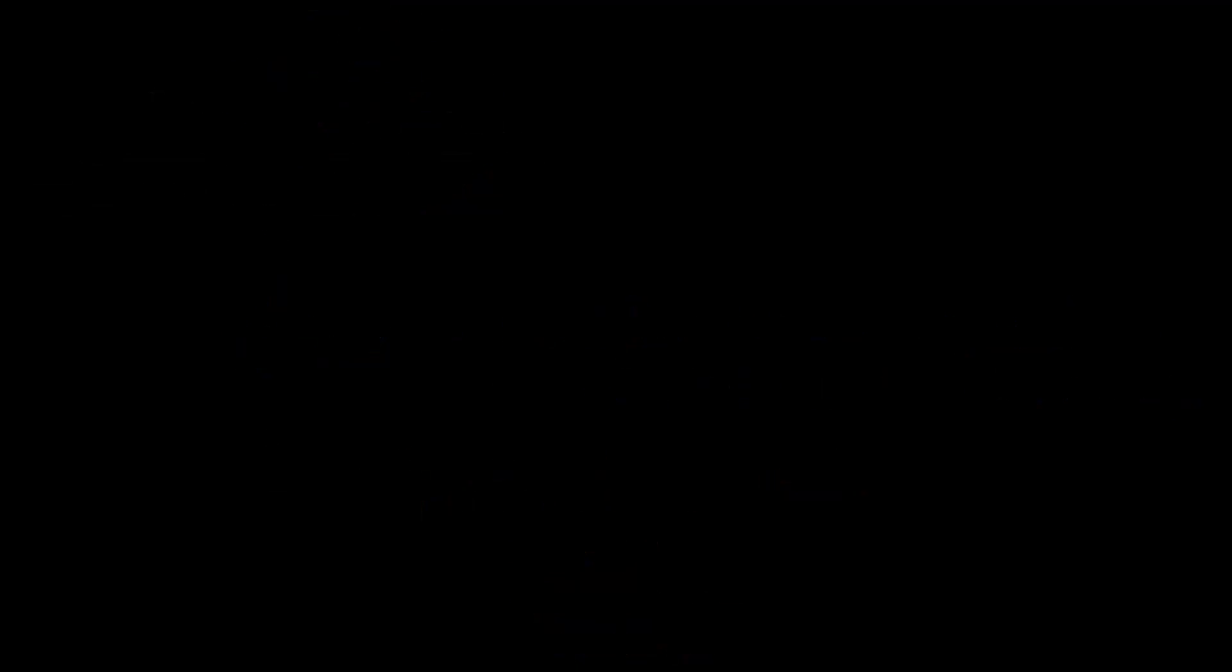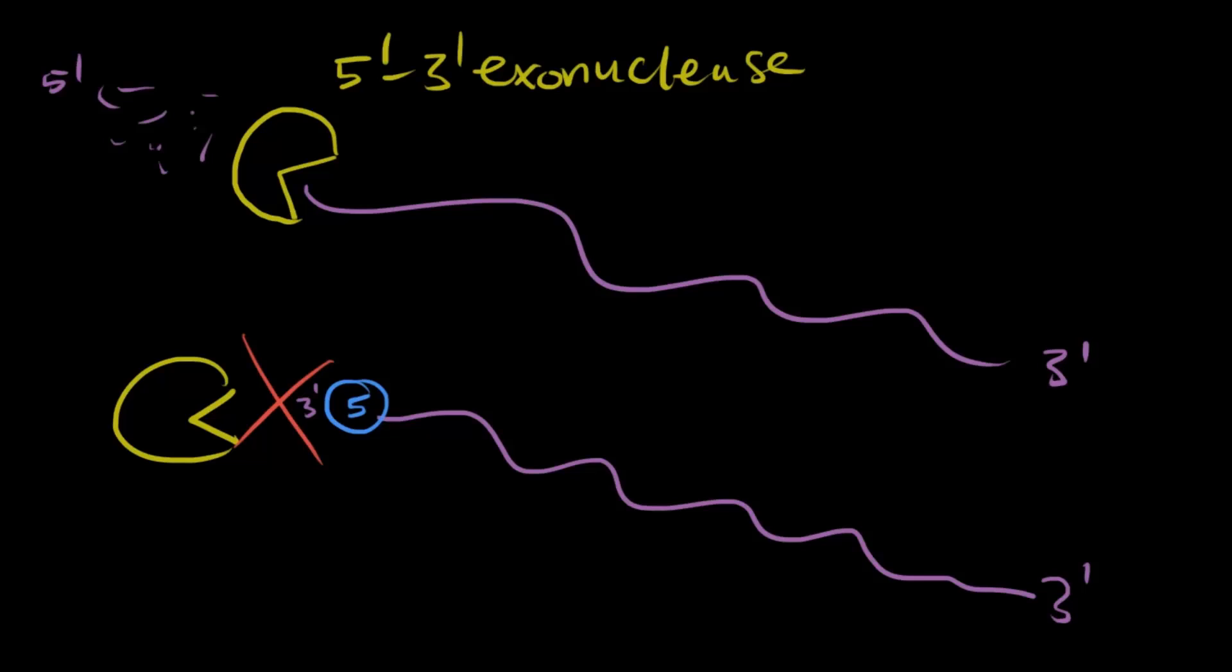This cap is attached through a triphosphate bridge and is added backwards, like this. So if I was the 5' to 3' exonuclease, I'd normally see this 5' end and eat away from there, but since this cap has been added backwards, I would look for a 5' end but not see it because this end is technically a 3' end. Thus, it gets protected. The cap serves also as a way for the mRNA to be shipped out properly and to be translated properly.